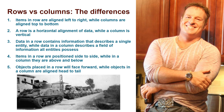You can get a little bit more technical. Items in a row are aligned from left to right, while columns are aligned top to bottom. A row is a horizontal alignment of data; a column is vertical. Data in a row usually contains information that describes a single entity — so the data might be a person's first name, last name, email address, or information about a house: the street, the postal code, the city. A row usually describes an entity, while data in a column usually describes a field of information that all entities possess. So every entity is going to have an email address, and that's going to be represented in a column. Items in a row are positioned side to side, while in a column they are above and below.